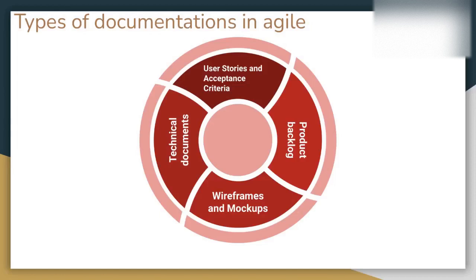The last documentation type, more commonly found in engineering teams, is technical documentation. Depending on the complexity of the project, technical documentation related to system architecture, design decisions, data models, and integration points can be developed. This helps the development team understand how different components of the software interact and how they should be implemented. One example of such technical documentation is API documentation — application programming interface documentation — which helps developers understand how to interact with the software's functionality programmatically.